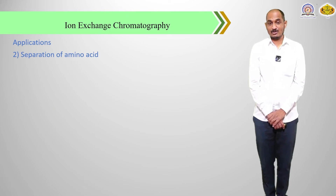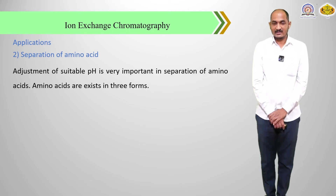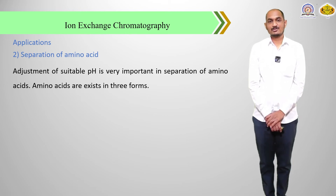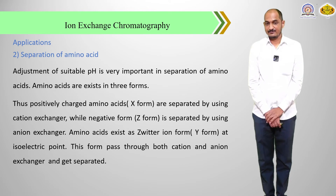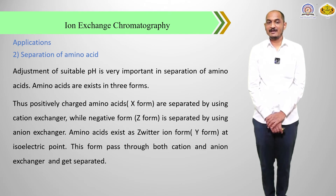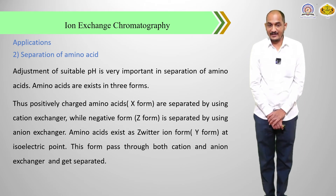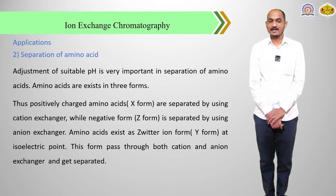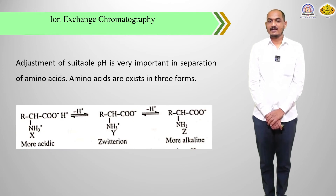The second application of ion exchange chromatography is the separation of amino acids. The adjustment of a suitable pH is very important in the separation of amino acids, which exist in three forms. Positively charged amino acids are separated using the cation exchanger, while negatively charged amino acids are separated using the anion exchanger. Amino acids in zwitterion form, at the isoelectric point, pass through both cation and anion exchangers and get separated. The three forms of amino acid — more acidic form, more alkaline form, and zwitterion form — are shown.